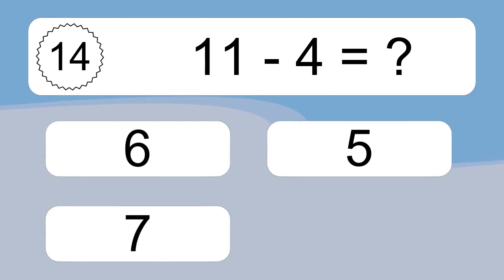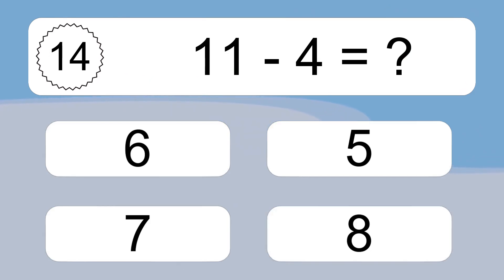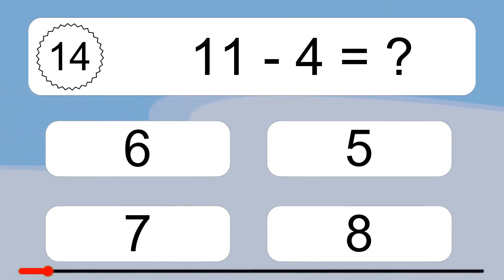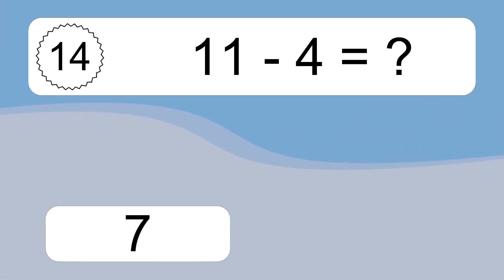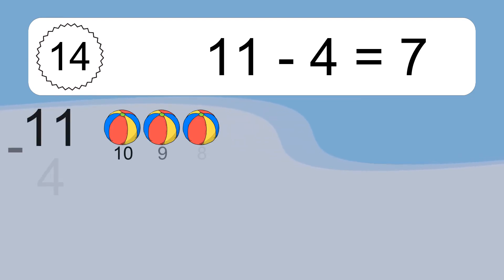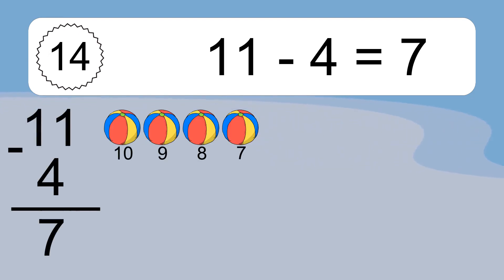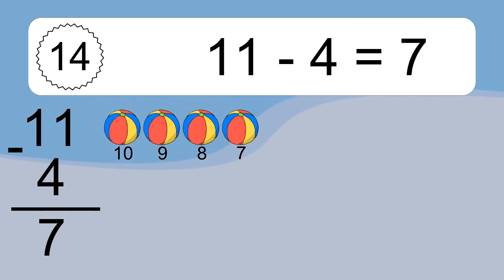11 minus 4 equals what? 11 minus 4 equals 7. Let's count it: 10, 9, 8, 7.